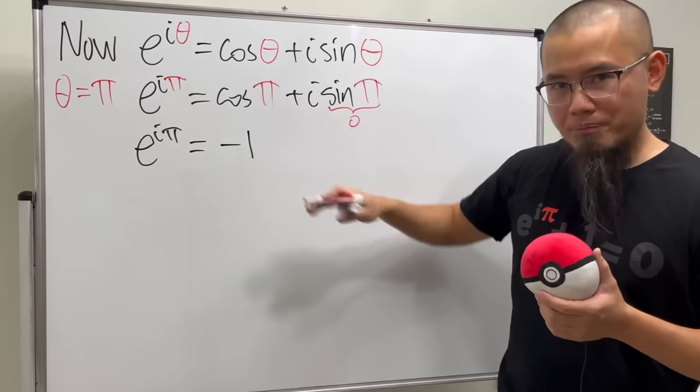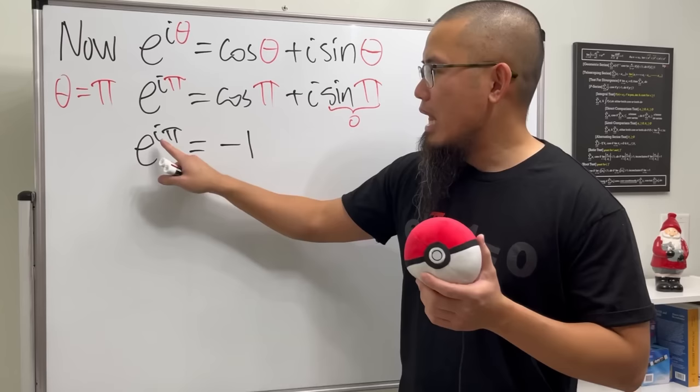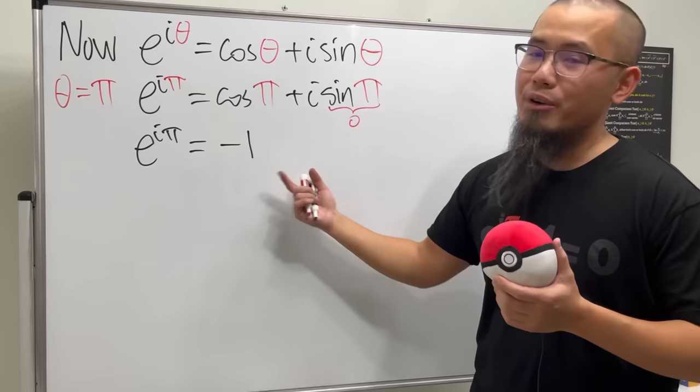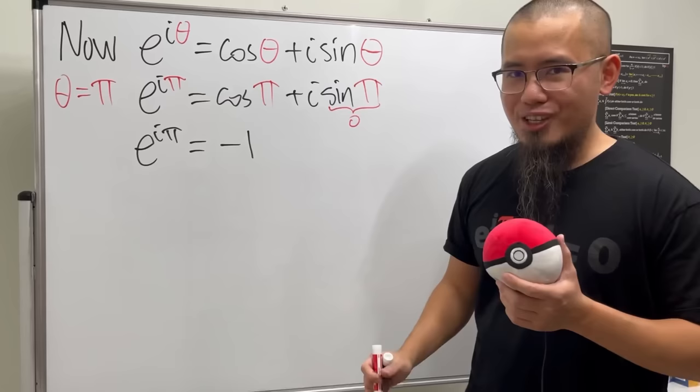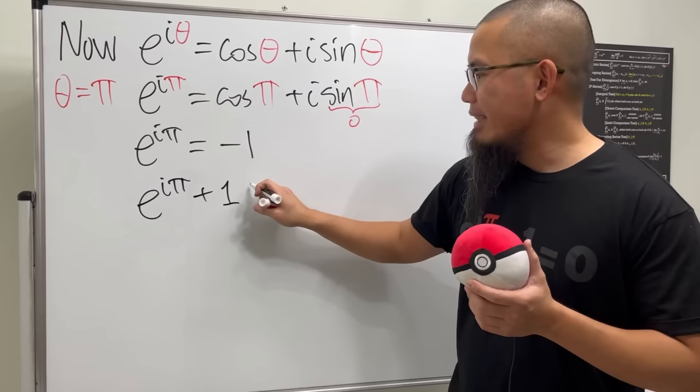e and pi are both irrational. i is imaginary. And when you combine them in this fashion, you end up with a real number, negative 1. But you know what? We are not done yet, because we are going to move the negative 1 to the left-hand side. So, ladies and gentlemen, here we get e to the i pi's power, and then we are going to add 1 to it. And all in all, this right here is equal to 0.